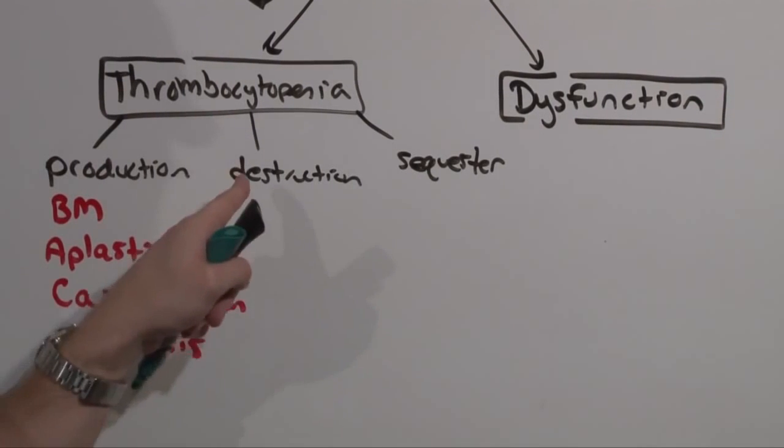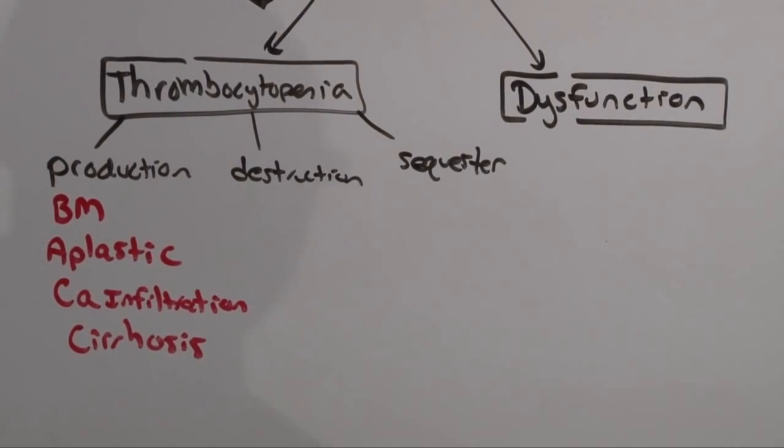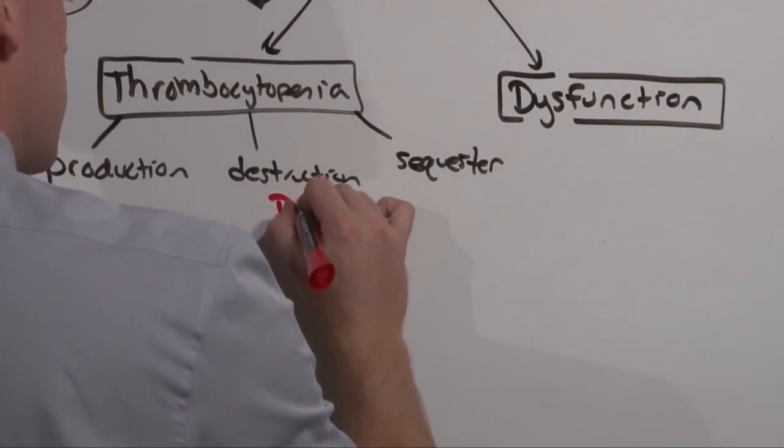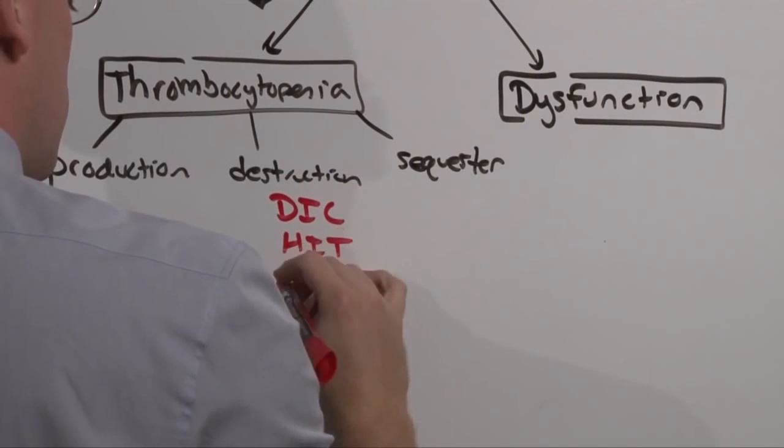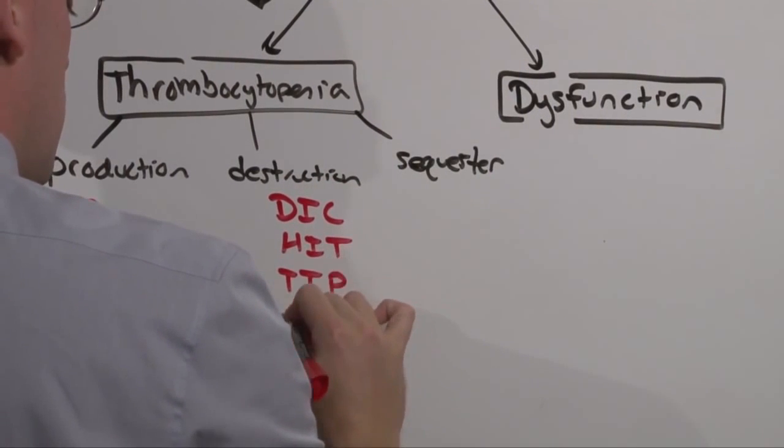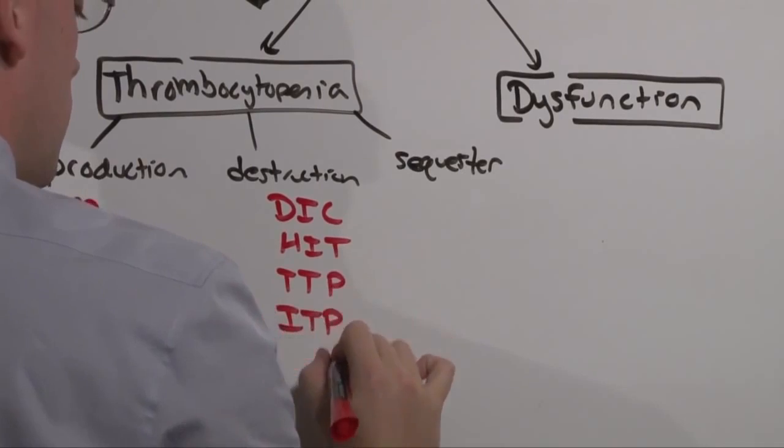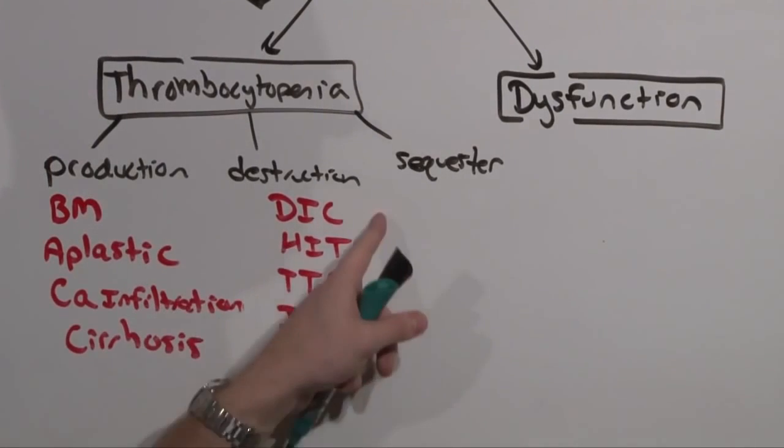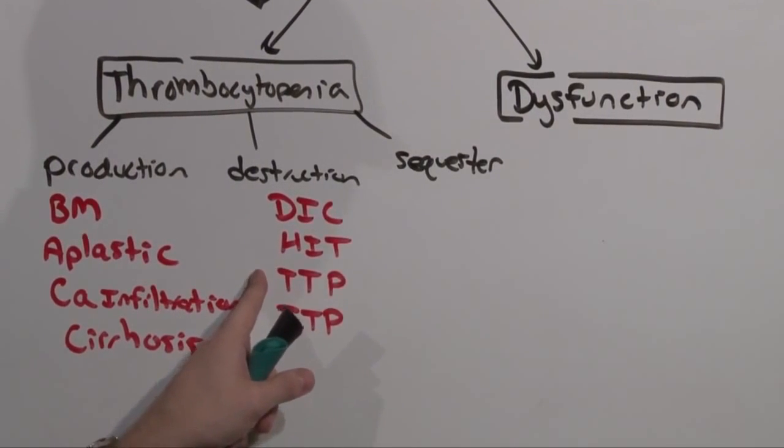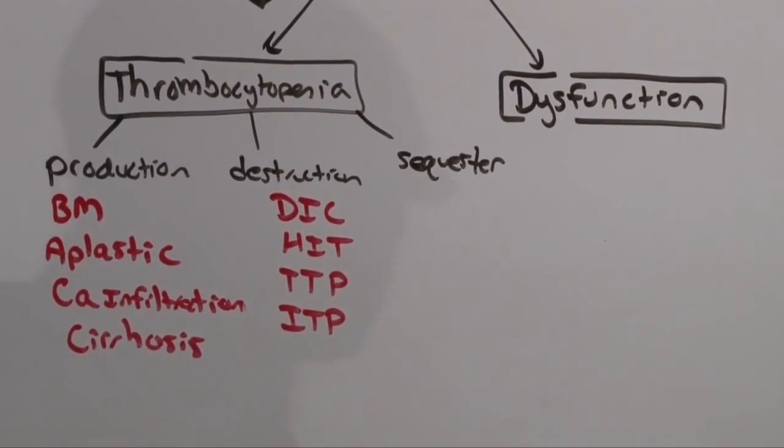But you must rule out destruction, which is alphabet soup. That is DIC, HIT, TTP, and ITP. This is a whole lecture in and of itself that follows this one. And sequestration is going to occur in a big spleen.